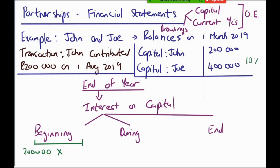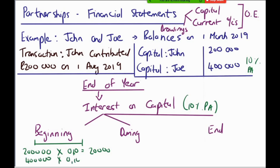Working out John's interest on capital is fairly straightforward: 200,000 times 10% per annum. But remember, the 10% per annum can be calculated based on balances at the beginning of the year, during the year, or at the end of the year. If it's the beginning of the year, John gets 200,000 × 10% = 20,000 rand interest on capital. For Joe it's 400,000 × 10% = 40,000.